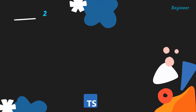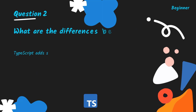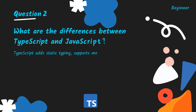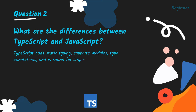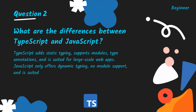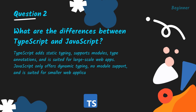What are the differences between TypeScript and JavaScript? TypeScript adds static typing, supports modules, type annotations, and is suited for large-scale web apps. JavaScript only offers dynamic typing, no module support, and is suited for smaller web applications.